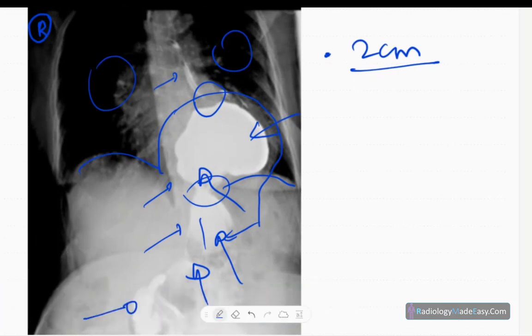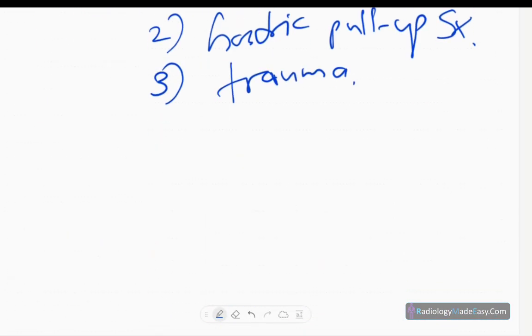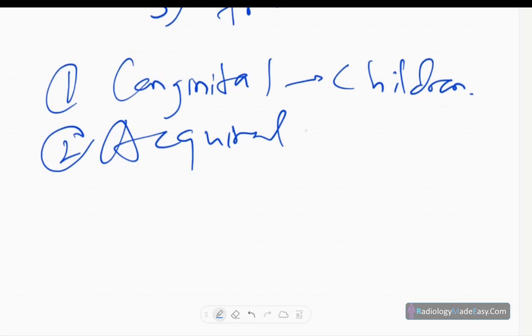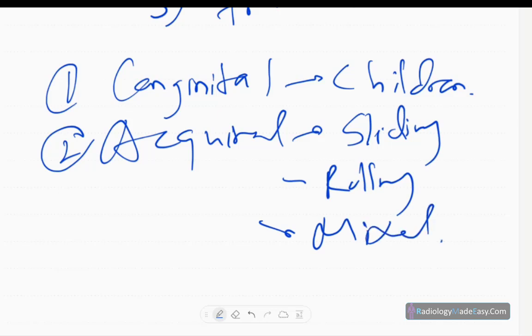In this case, the hiatus hernia or esophageal diaphragmatic hernia has two types: one is congenital, one is acquired. Congenital types I call diaphragmatic hernia in children. There are three types: sliding ones, rolling hernias, and mixed ones. Ninety percent are sliding hernias as in this case, then the other ten percent are rolling and mixed type hernias.